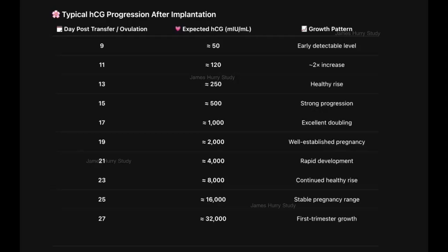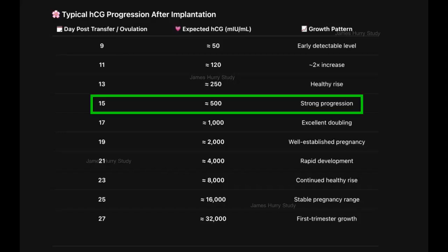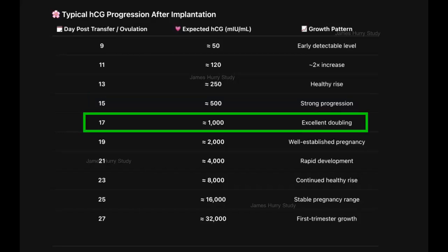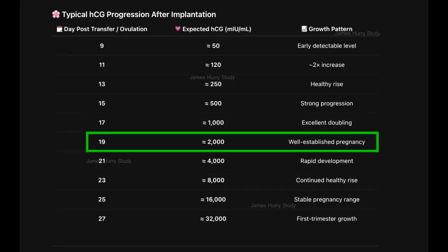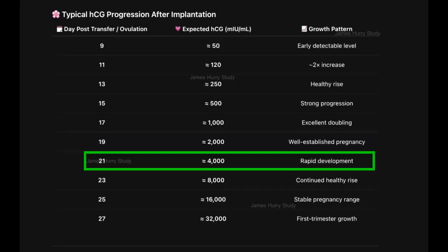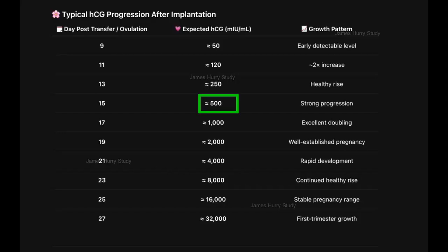In most confirmed pregnancies, as shown in the table, the HCG level is approximately 500 MIU per milliliter by day 15, consistent with normal early embryonic development. By day 17, the level is expected to double to 1000 MIU per milliliter, reach approximately 2000 MIU per milliliter by day 19, and approximately 4000 MIU per milliliter by day 21. When the pregnancy is normally developing, the hormone level doubles every 48 hours. This progressive rise reflects the normal progression of the pregnancy.